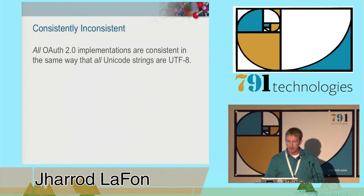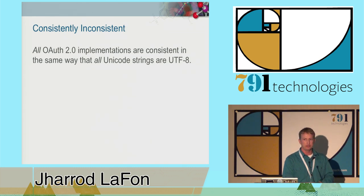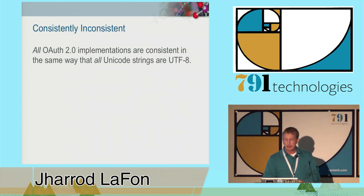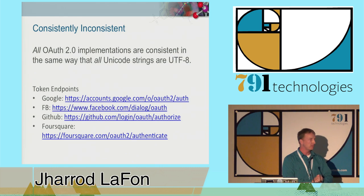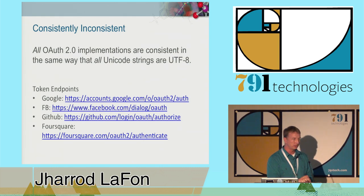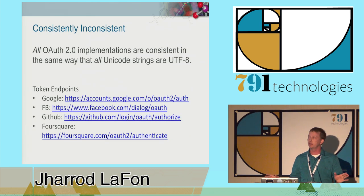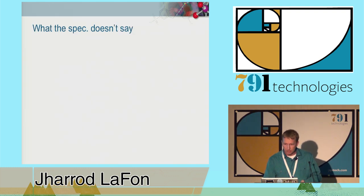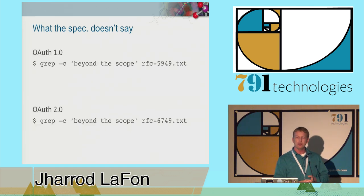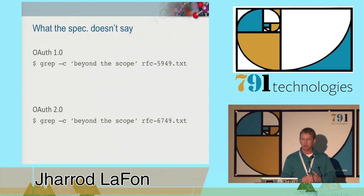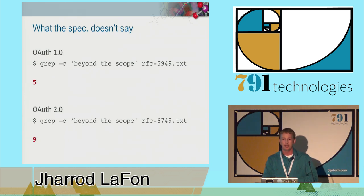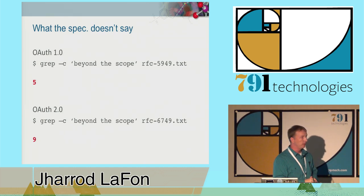On the provider side, you've got to provide URLs for authorization and tokens, and provide a means for client and user registration. But the best thing is you get to make your own inconsistent implementation—and there are many inconsistencies. In fact, all OAuth 2 implementations are consistent in the same way that all Unicode strings are UTF-8. Here's an example: these are the token endpoints for Google, Facebook, GitHub, and Foursquare—they are all different. This is within spec, because the spec doesn't say anything about what these endpoints should look like. OAuth 2 is meant to be a lot more general than OAuth 1, and there's a lot that's left up to you.